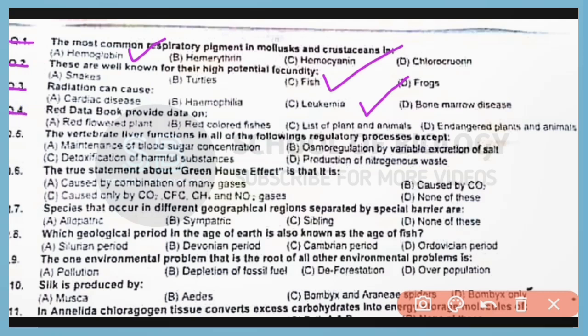Question number 4. Red data book provides data on endangered plants and animals. Correct answer is option D.